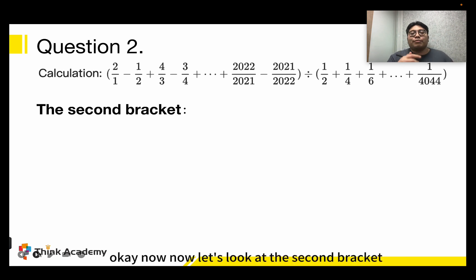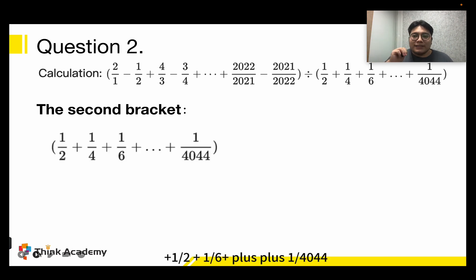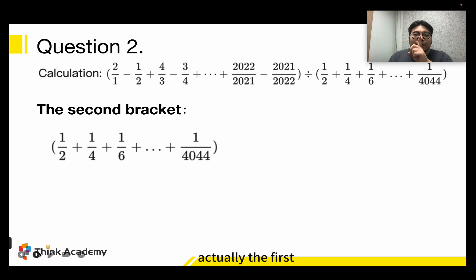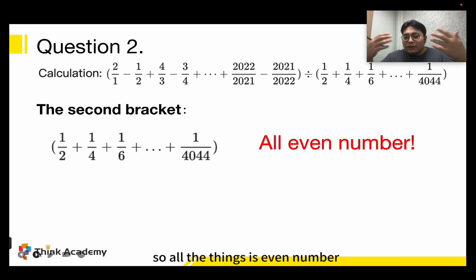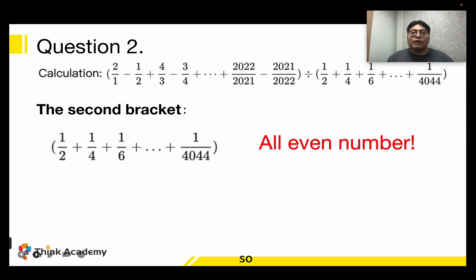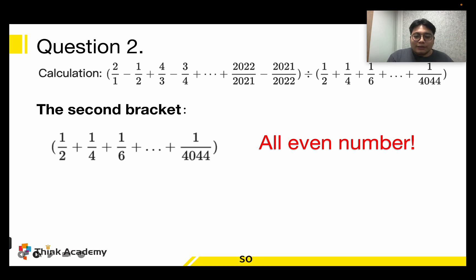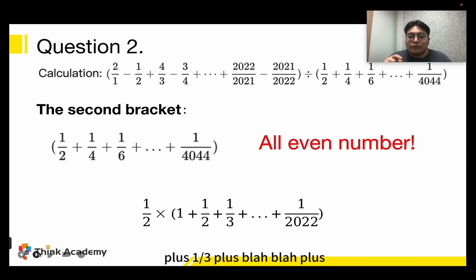Now let's look at the second bracket. You can observe it is 1 over 2 plus 1 over 4 plus 1 over 6, and so on, up to 1 over 4044. All the numbers in the denominator are even numbers, and even numbers can be divided by 2. So we can factor out 1 over 2 outside the bracket, giving us: 1/2 times (1 + 1/2 + 1/3 + ... + 1/2022).